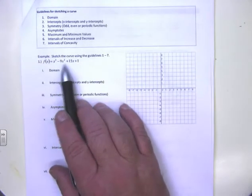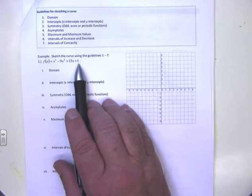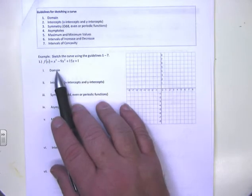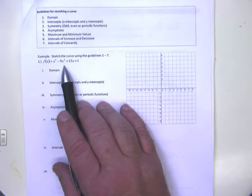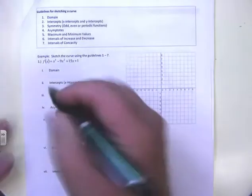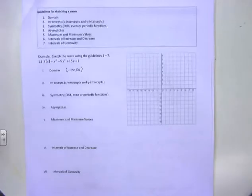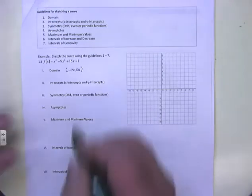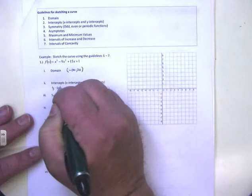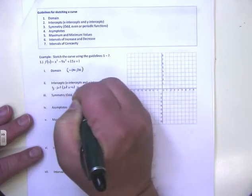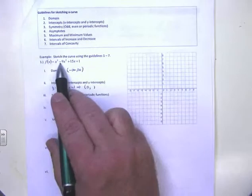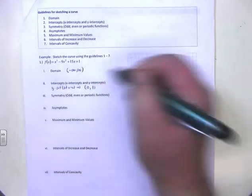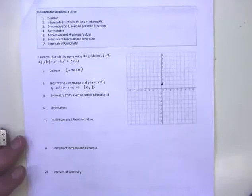Look at this problem: f(x) = x³ + 9x² + 15x + 1. What is the domain? It's a polynomial, so all real numbers — negative infinity to infinity. For intercepts: the y-intercept, set x = 0. When I plug in 0, y = 1. So the point (0, 1) is on the graph.